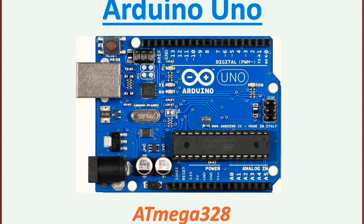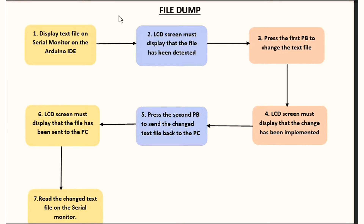In this video I'll be designing a file download project which primarily makes use of the Arduino Uno ATmega328. I want to develop a program that can receive a text file from the PC, change that text file, and send it back to my PC displayed on the serial monitor. When I power up the program, the text file will be displayed on the serial monitor and on my LCD screen I'll be able to read that the file has been detected.